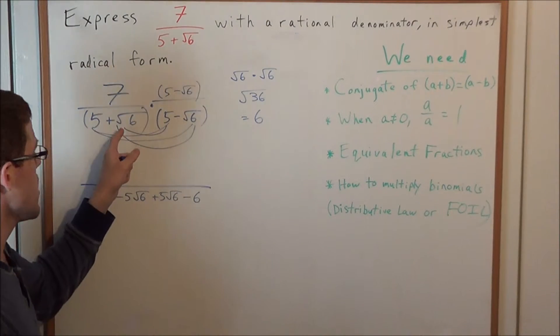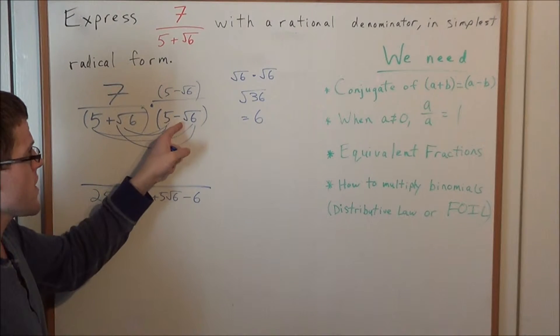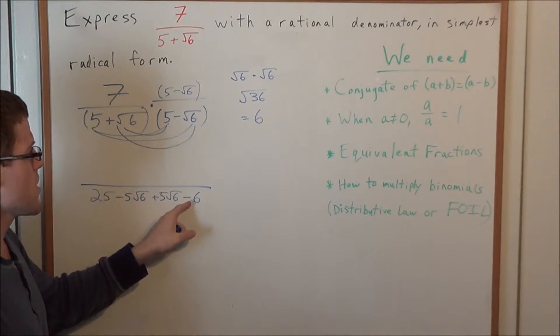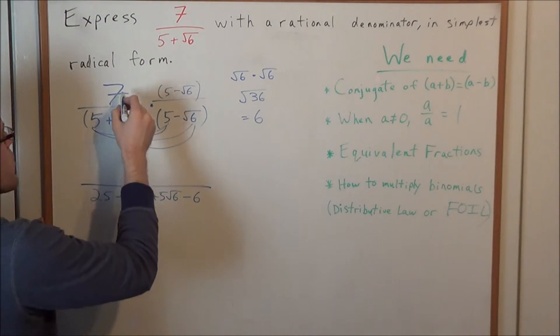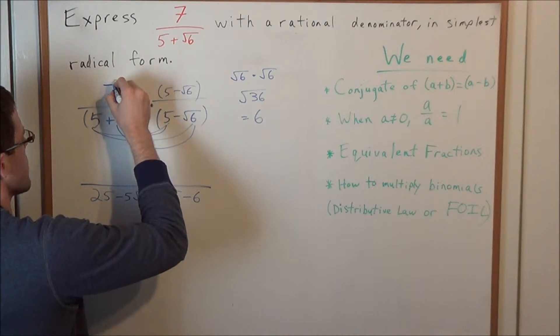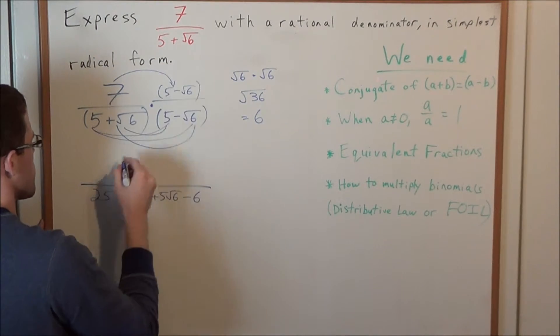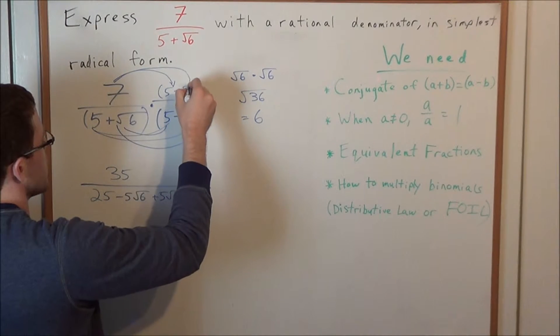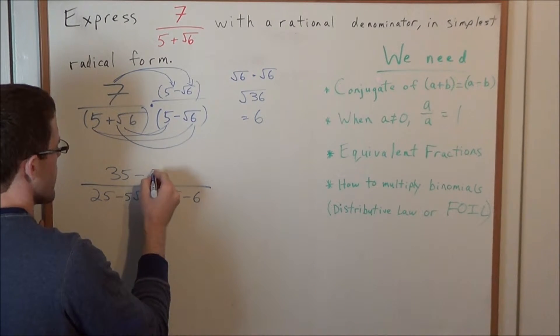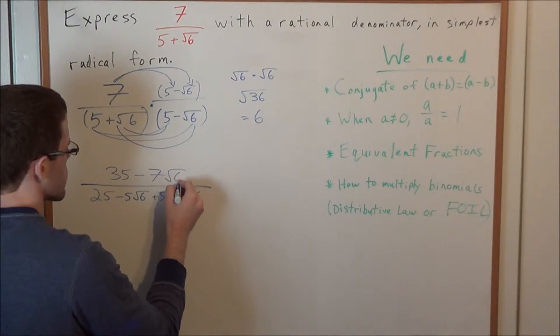Now let's look at why these two terms multiply to a minus 6. We have the square root of 6 times the square root of 6. This gives us the square root of 36, which in turn is just equal to 6. So when we have the product of a positive times a negative, this is going to give us the minus sign in front of the 6. So let's now look at the numerator. We have to use the distributive law. We have 7 times a positive 5, so we have 35. And now we have 7 times a minus radical 6, so we have minus 7 radical 6.